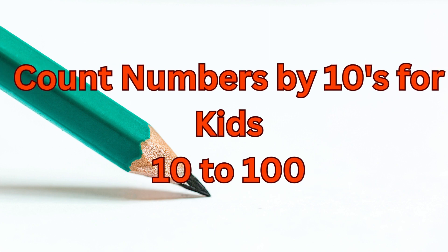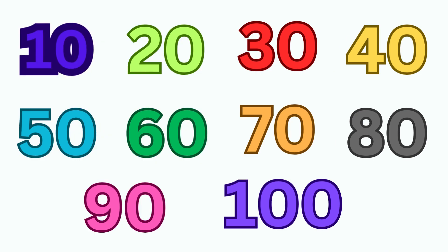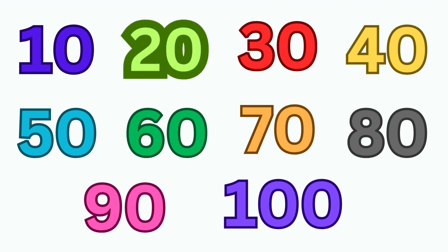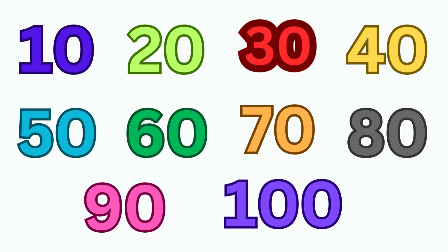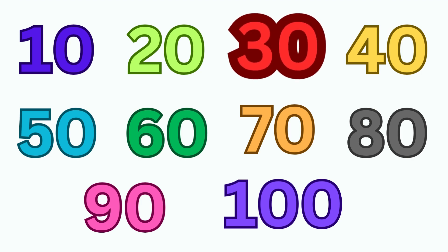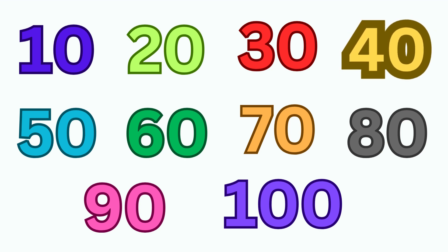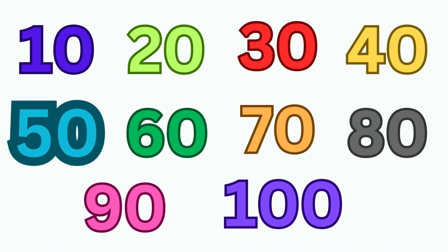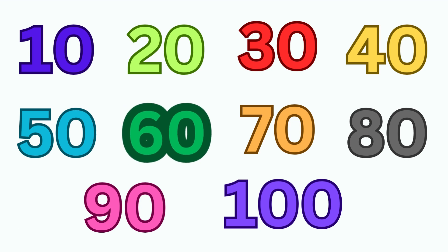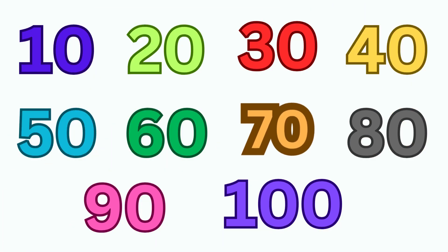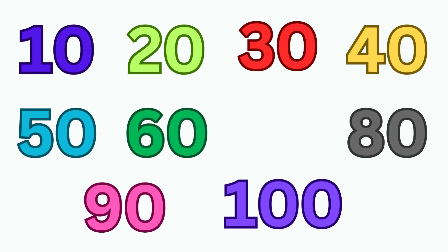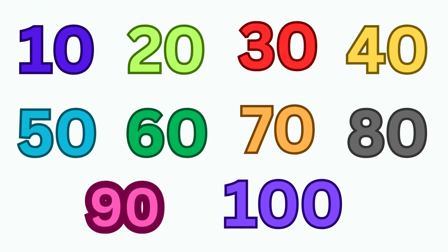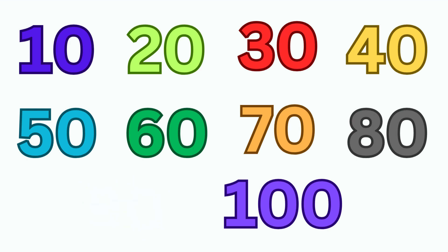Count numbers by 10s for kids, 10 to 100. 10, 20, 30, 40, 50, 60, 70, 80, 90, 100.